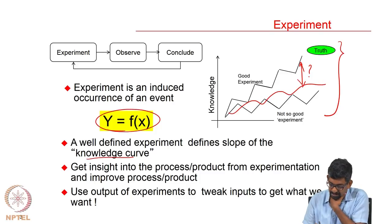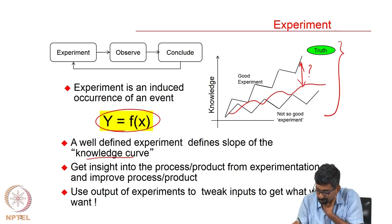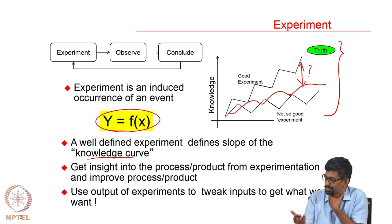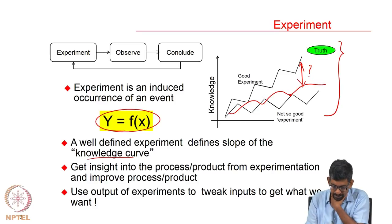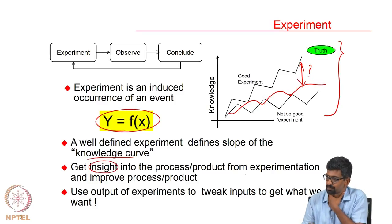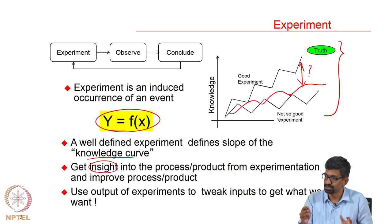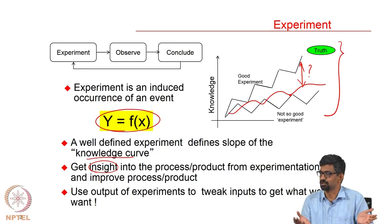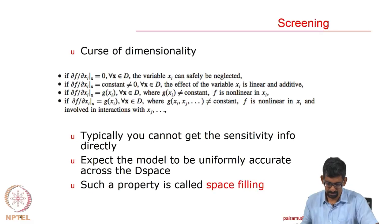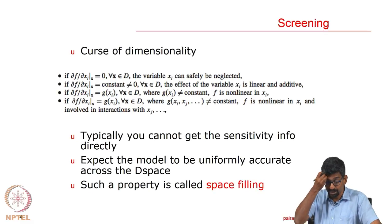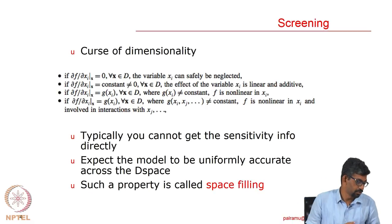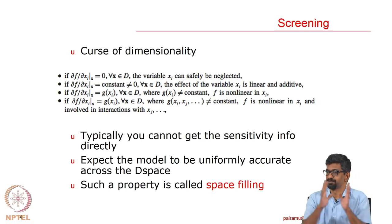What we are trying to do — y equal to f of x — a well-defined experiment will take you very close to your knowledge curve. The whole idea is to get some insight into the process or product. You are not just trying to find the optima, though you can still do it. But your overall idea is to get insight, and then based on this output you can tweak your inputs to change them to your target value — that is also optimization.